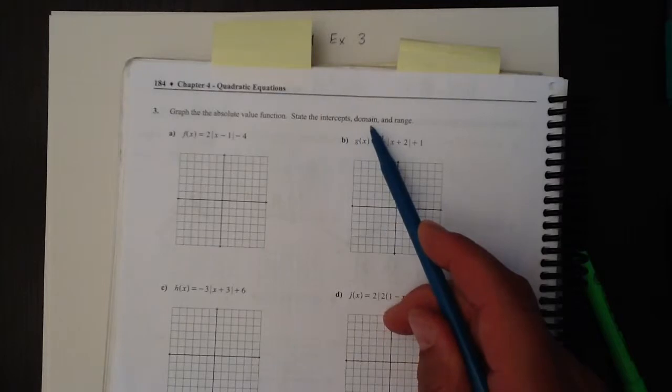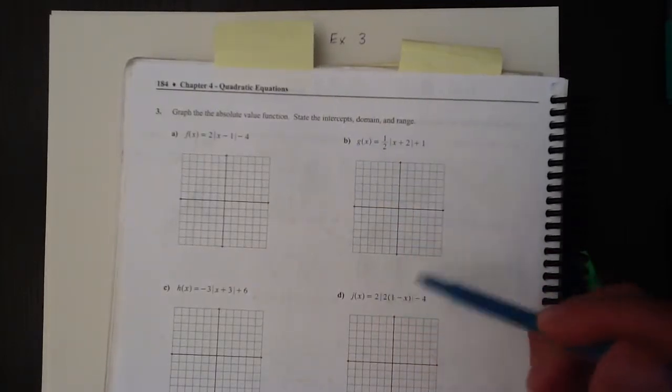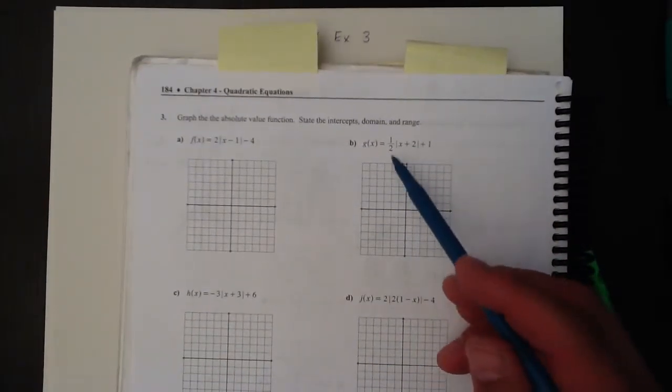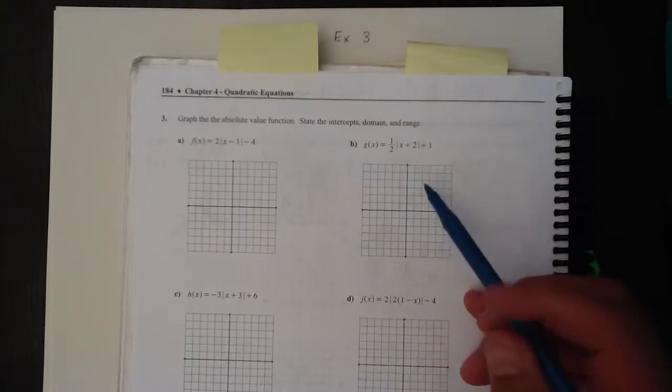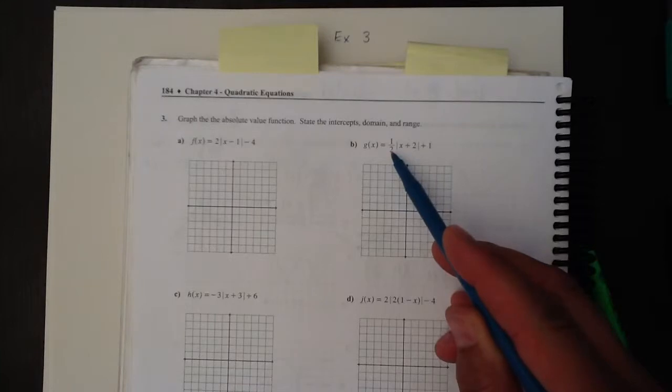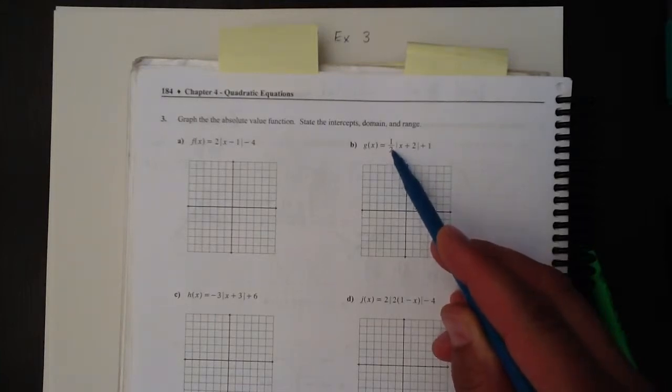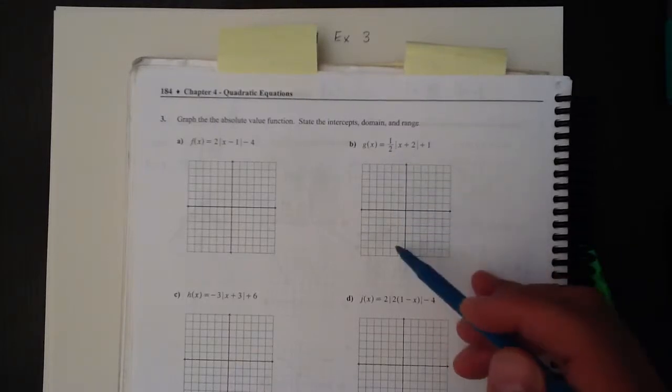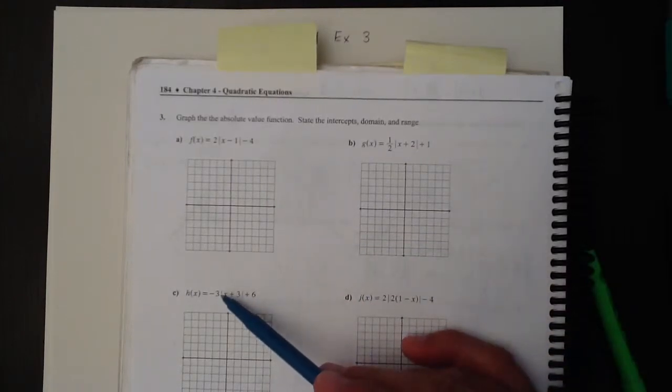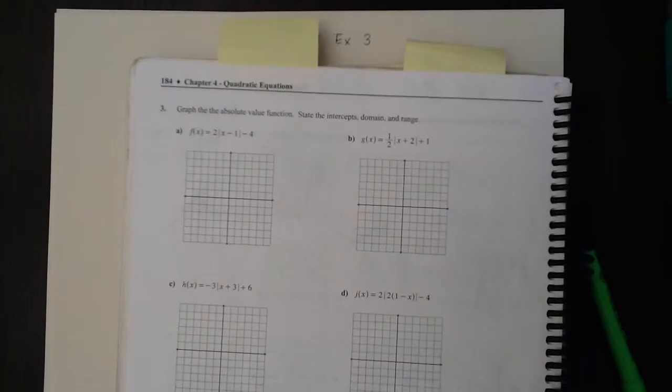In all cases, the domain is going to be the set of real numbers because you're going to have a V-shaped graph that will go on forever and cover all values for x. But the range will be, remember, from the vertex up or from the vertex down depending on the integer value here, whether it's above zero or not. If it's above zero, it will be opening up, so it will be from the vertex up for the range. And if it's a negative number like it is here, then it's going to be from the vertex down. That's the range.